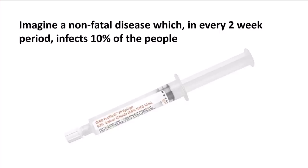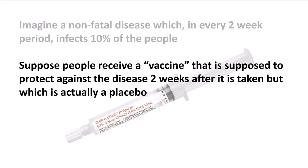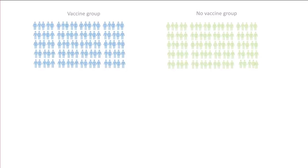Imagine a non-fatal disease which in every two-week period infects 10% of people previously uninfected. Suppose people receive a vaccine that is supposed to protect against the disease two weeks after it's taken, but which is actually a placebo. We're going to observe some people who get the vaccine and some who don't.